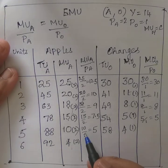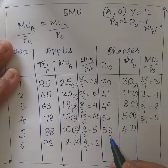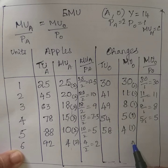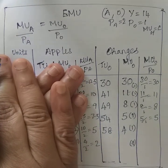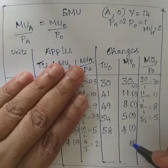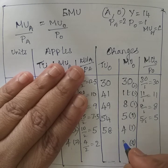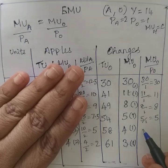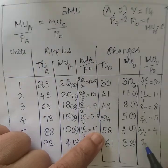Now consider the other extreme — spending all income only on oranges with no apples purchased. The MU/price for a hypothetical 5th orange would be 4÷1 = 4, and for a 6th orange approximately 3÷1 = 3. Total utility from oranges alone would be around 61, which is far less than the mixed case. Clearly, oranges alone give lesser utility compared to the mixed combination.